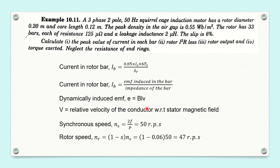The value B is directly given: the maximum flux density is 0.55 Weber per meter square. The length of the rotor bar — the length of the rotor conductor — will be the same as that of the rotor core length, that is 0.12 meter. So B and L are known. Now we need to know the value of V, the relative velocity between the stator magnetic field and the rotor conductor in meter per second.